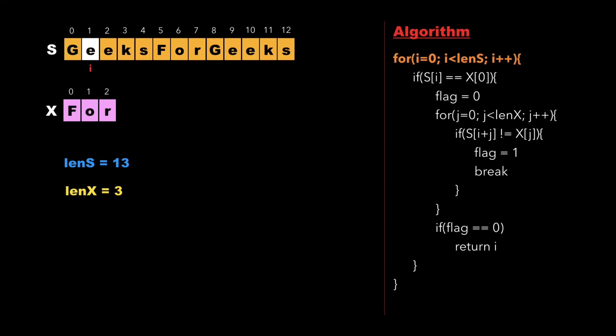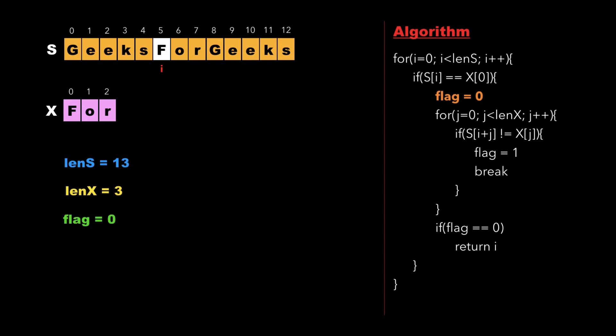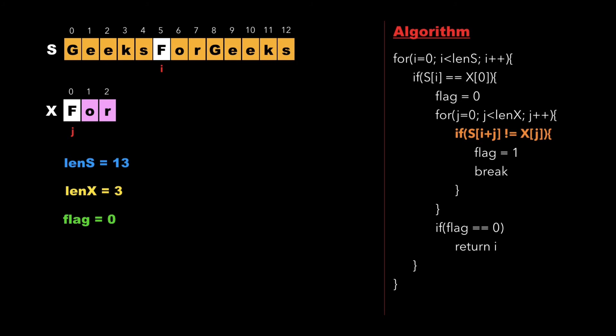Now i points to character 'e'. Again we check whether 'e' equals 'f', which is false. We keep incrementing i until we reach a character in string s that equals the first character of x. Once s[i] equals x[0], we enter an if-condition and create a variable flag initialized to zero. Then we have a nested for loop running from j equals zero to the length of string x, and at each step we check whether s[i + j] is not equal to x[j].